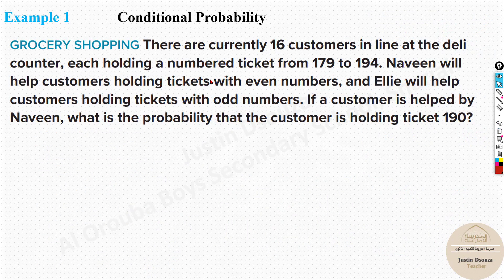Let's look at our example problem. There are currently sixteen customers in line at a deli counter, each holding a number ticket from 179 to 194. Naveen will help customers holding tickets with even numbers and Ellie will help customers holding tickets with odd numbers. If a customer is helped by Naveen, what is the probability that the customer is holding ticket 180?